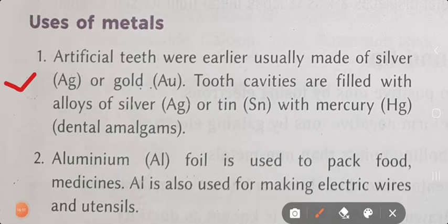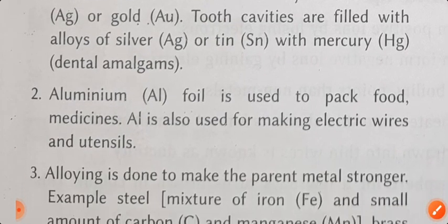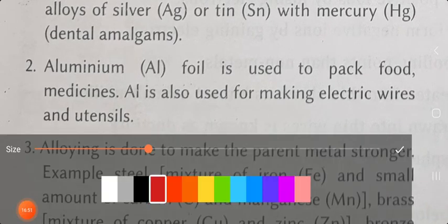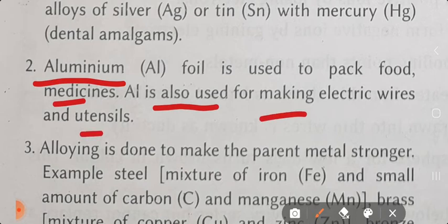पहले के time पर जब plastic और दूसरी चीज़ें available नहीं थीं, तो बहुत सारी useful चीज़ें metal से बनाते थे। Artificial teeth पहले silver और gold से बनाए जाते थे। Cavities are filled with alloys. Aluminium is used to pack food and medicines. Aluminium is also used for making electric wires and utensils.